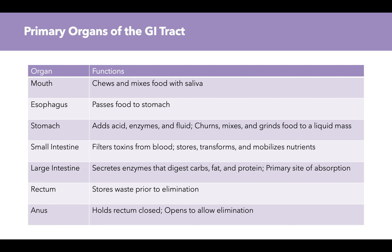To summarize the primary organs of the GI tract: the mouth chews and mixes food with saliva; the esophagus is a tube passing food to the stomach; the stomach adds acid, enzymes, and fluid, and churns, mixes, and grinds food to a liquid mass.